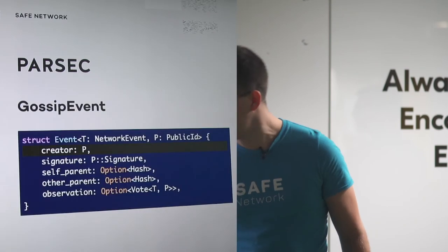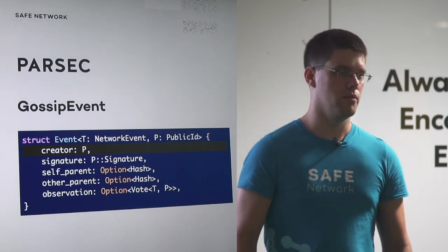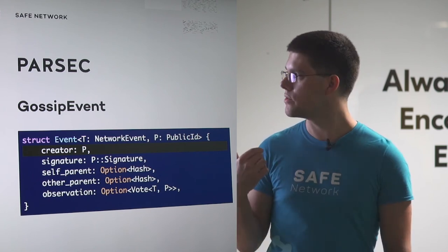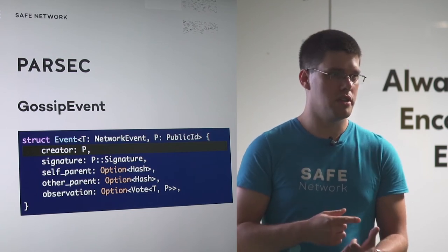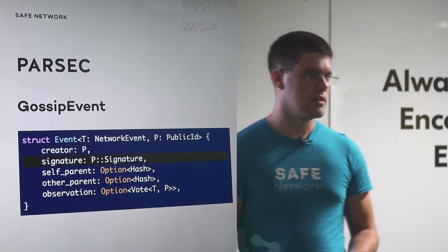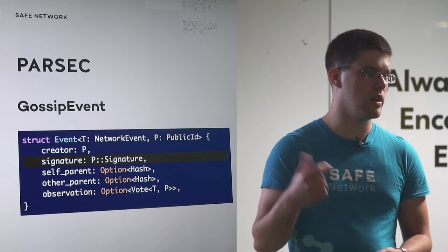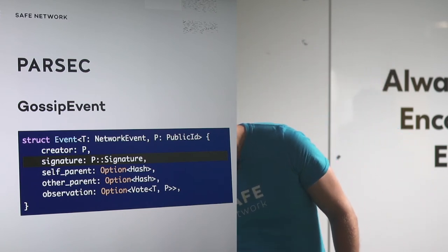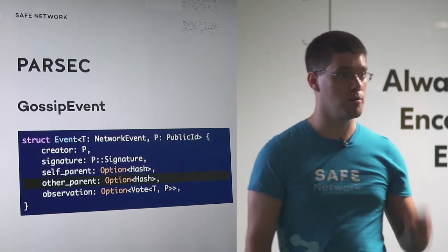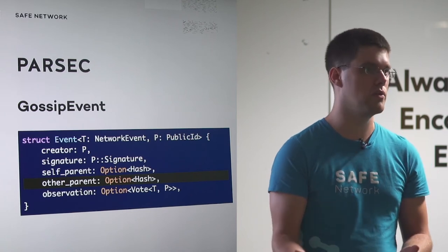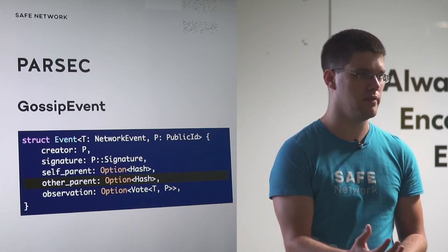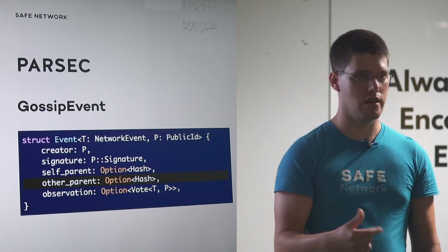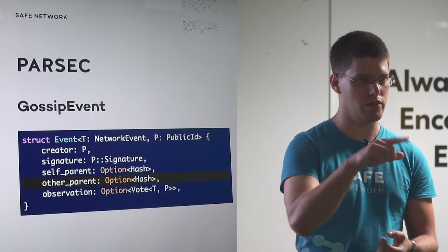Let's look at the structure of a gossip event. Every gossip event has some data inside it. First, it has its creator, which is verifiable because it also has the creator's digital signature — we know the creator's public key, so we can verify the signature. Every gossip event also has two parents, optionally: the self-parent and the other parent. For example, when a node first joins the network, its first event won't have any parents at all. But every other event has a self-parent, which is another event created by the same node earlier, creating a linear history for every node in the network.